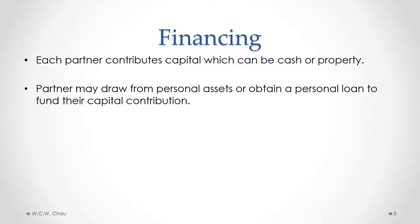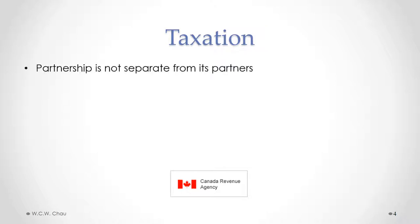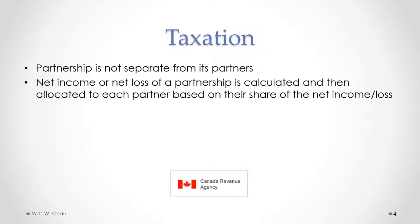How is a general partnership taxed? The basic key legal concept is that the owners and the business are one and the same — the partners and the partnership are not separate. Because of that, for tax purposes, we first calculate the net income or net loss of the partnership, and then allocate that net income or net loss to each partner based on their share.